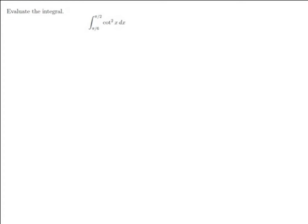Evaluate the definite integral of cotangent squared of x as x goes from pi over 6 to pi over 2. So this is cotangent squared. Let's remind ourselves what our identities are for cotangent. We have our base trig identity: sine squared plus cosine squared of x equals 1.